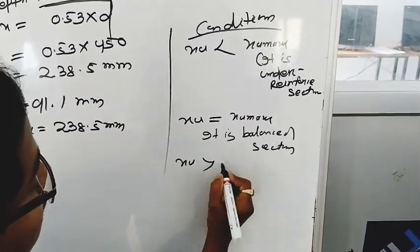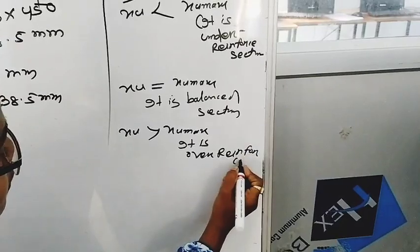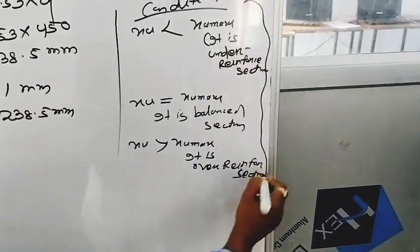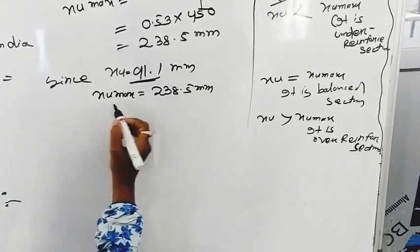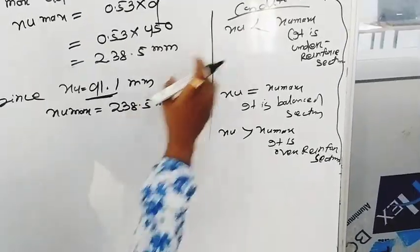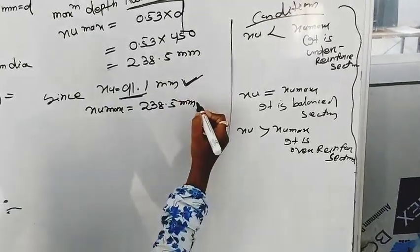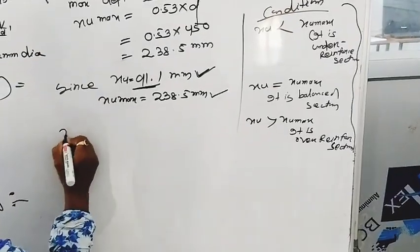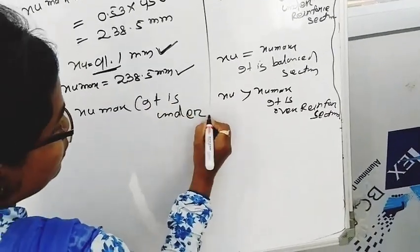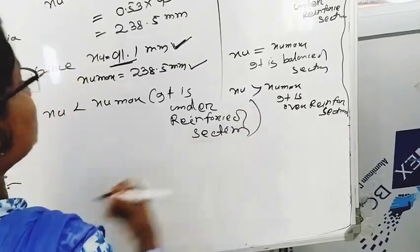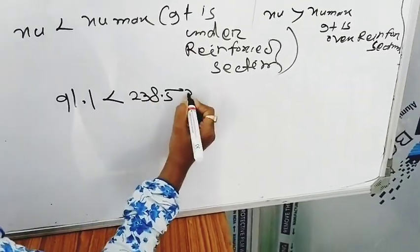If XU greater than XU maximum, it is over-reinforced section. We know that XU value is 91.1 mm, XU max is 238.5 mm. XU less than XU maximum. Now XU less than XU maximum, it is under-reinforced section. 91.1 is less than 238.5 mm.